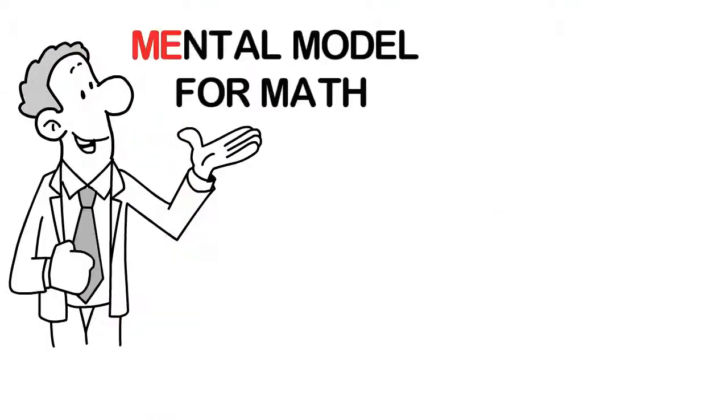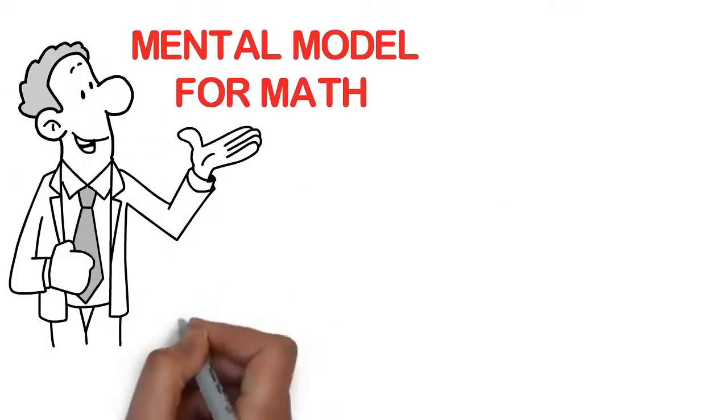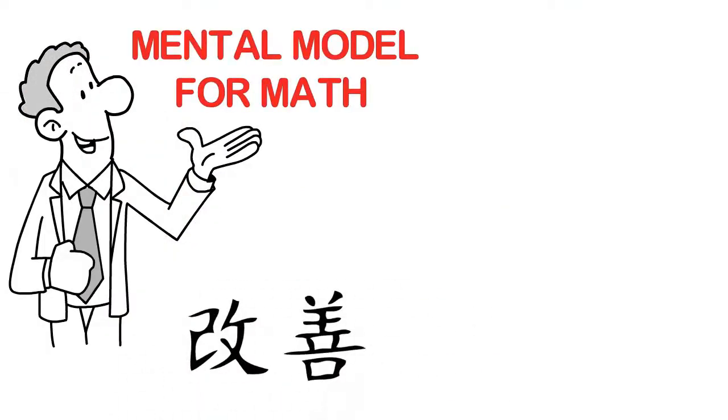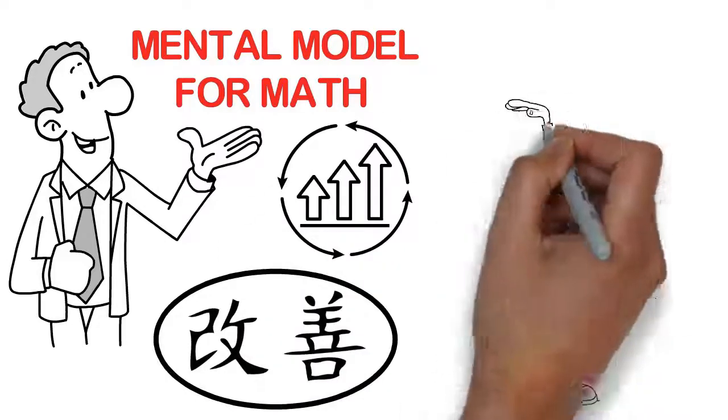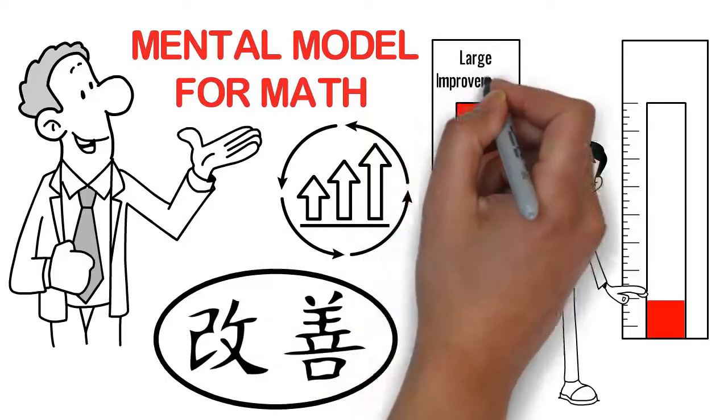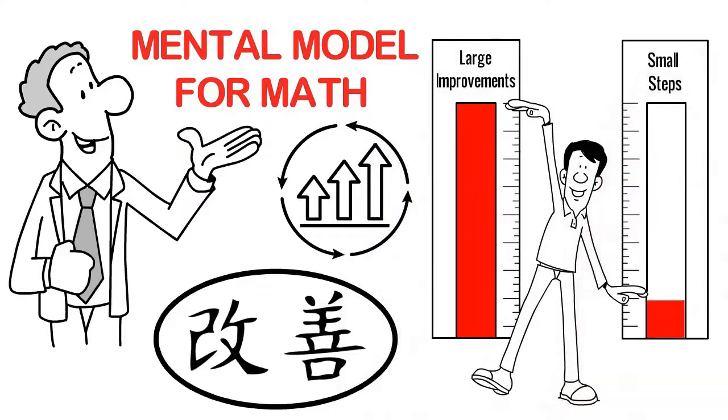Let's discuss the next mental model for math. It comes from a Japanese principle called Kaizen. Loosely translated, Kaizen means continuous improvement. But here's the magical part. Instead of large improvements, you make small steps each and every day.